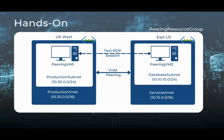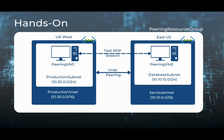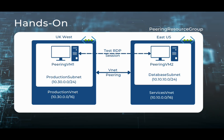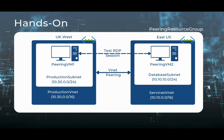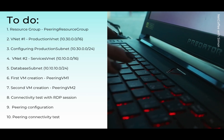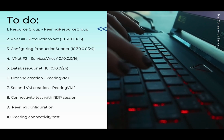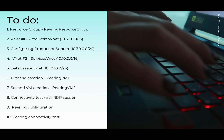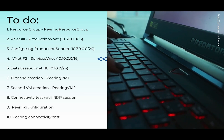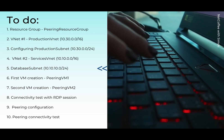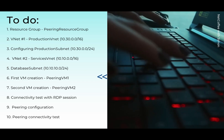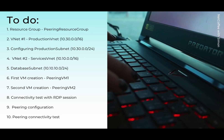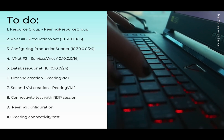This is the setup for our hands-on demonstration. We have two different virtual networks with two different VMs. We will configure global VNet peering between them, and then run a test RDP session to see if we can ping the virtual machines. To make things easier, I have prepared a quick to-do list. We'll start with the creation of the resource group, then the production VNet with appropriate subnet and IP ranges, then the services VNet with a database subnet. In points six and seven we create virtual machines, run the first RDP session to test connectivity — this ping will fail — then come back to configure peering and run the peering test.